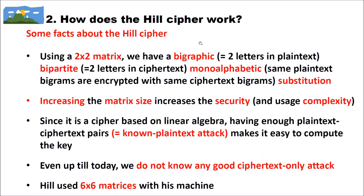Here are some facts about the Hill cipher. Using a 2x2 matrix, we have a bigraphic, bipartite, monoalphabetic substitution. It's bigraphic because we encrypt two letters at a time; bipartite because we get two ciphertext letters at a time; and monoalphabetic because the same plaintext bigrams are encrypted to the same ciphertext bigrams. Using larger matrices changes this to trigraphic/tripartite or fourgraphic/fourpartite, increasing security but also complexity. If you make one mistake, the entire block being encrypted is wrong.